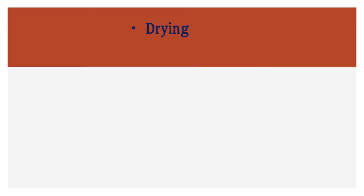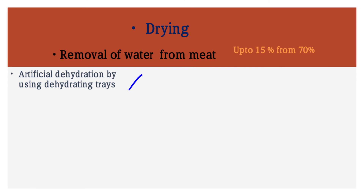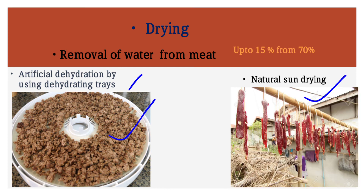Drying is one of the oldest methods applied to preserve meat qualities and tenderness. It involves removal of water from the meat, reducing it from about 70% down to around 15% water content. It is done through two methods: artificial dehydration using dehydrating trays with circulating air as shown on screen, and natural sun drying, which is still applied in deep rural areas of developing countries.